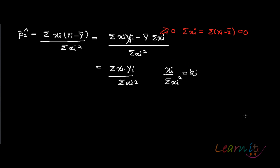Now there are some properties of kᵢ. Property A: summation of kᵢ would be summation of xᵢ upon summation of xᵢ squared, which is equal to zero — because the numerator, summation of xᵢ, equals zero as it is the sum of deviations from mean.